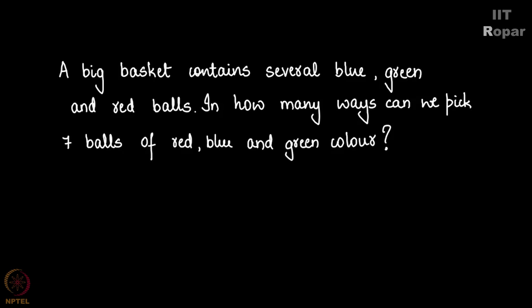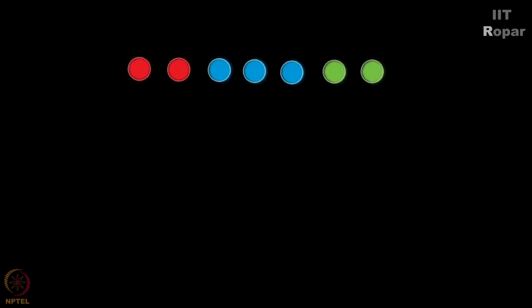Now I write 7 balls like this. I am going to place 2 sticks in between the balls to differentiate the colors. So if I place the sticks like this, it means I have picked 2 red, 3 blue, and 2 green balls.